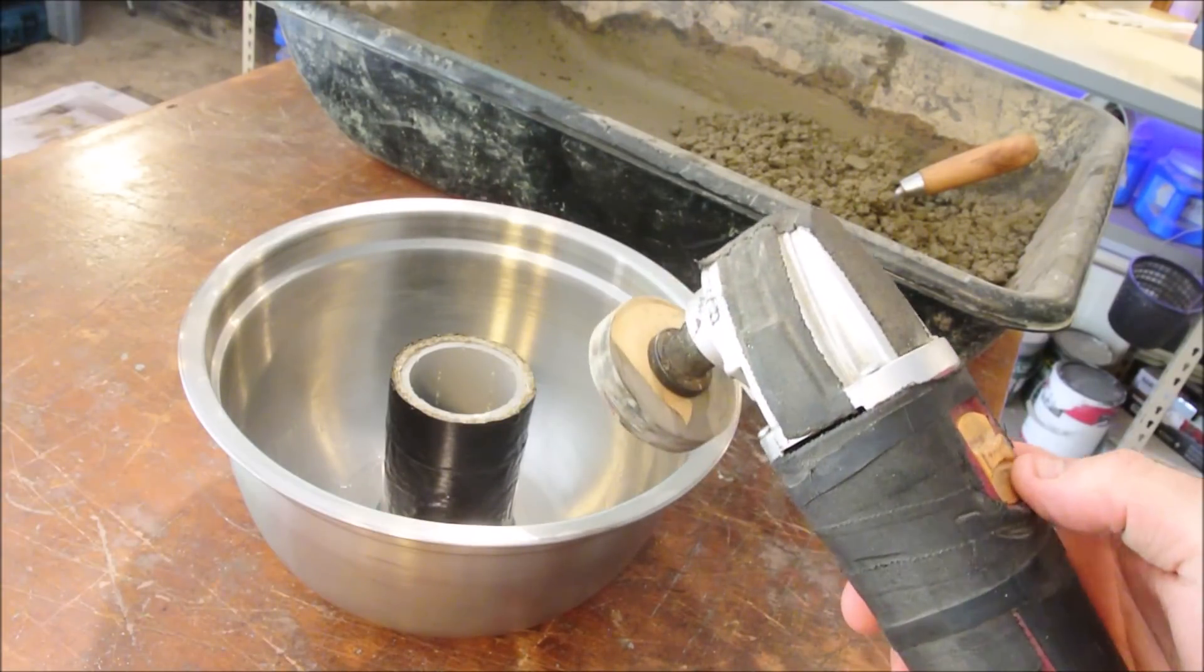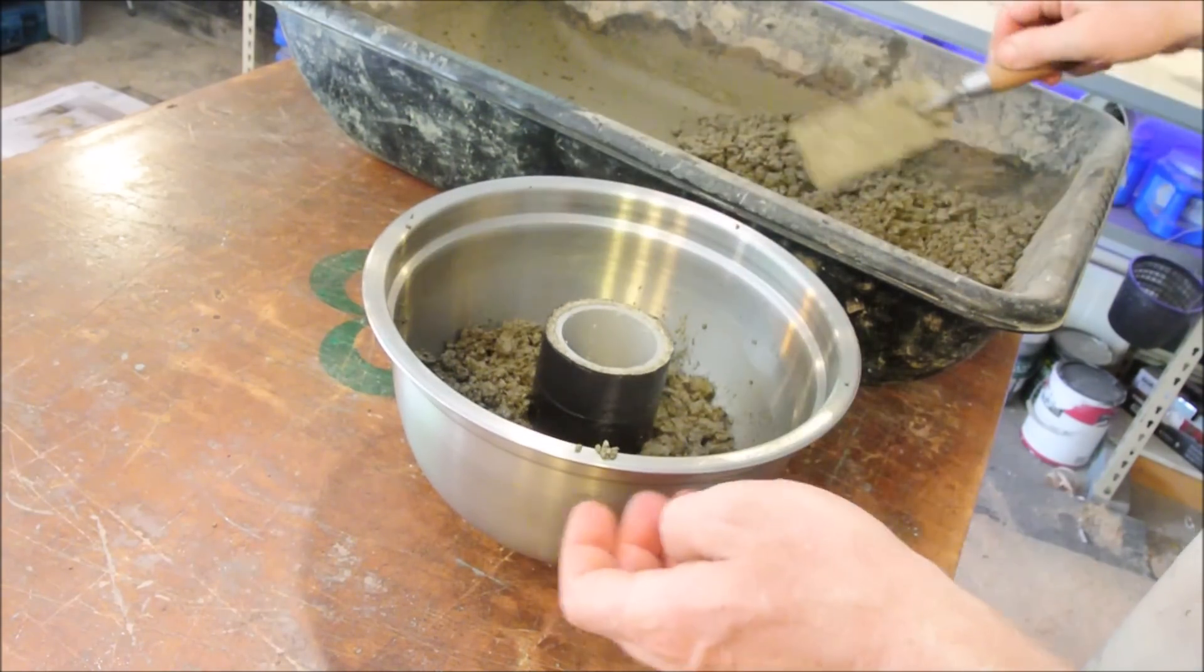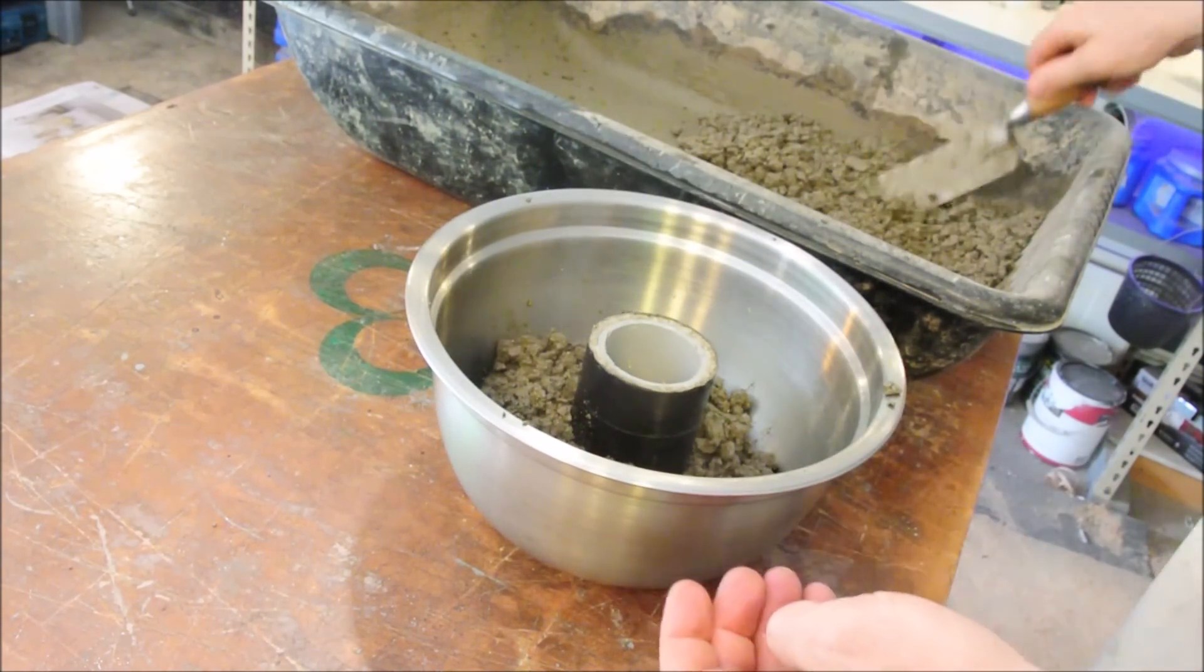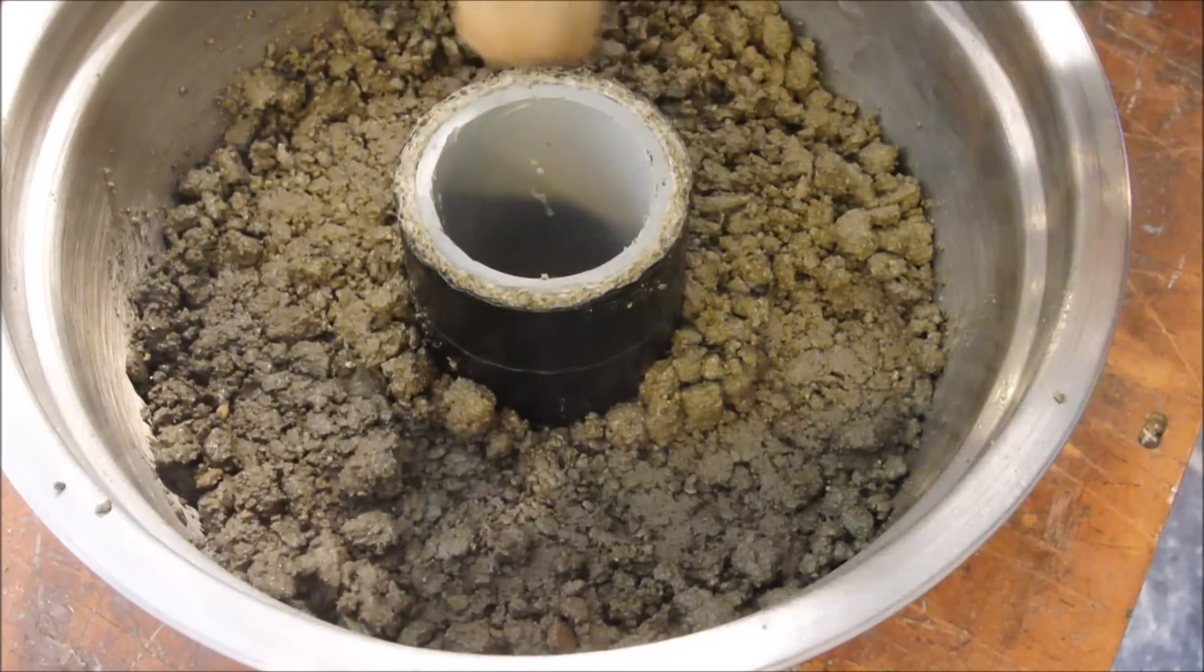Attach a wooden circle to your oscillating tool, and you can use it to vibrate this stuff. Of course, this mix is somewhat dry for vibration, but it will work at the end when you're working the cream up onto the top of the concrete.